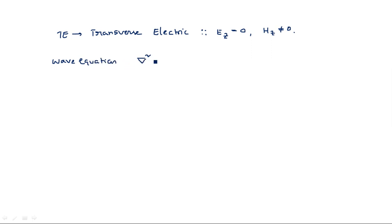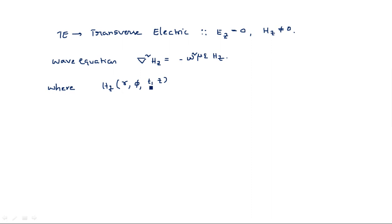The standard wave equation is: del squared Hz equals minus omega squared mu epsilon Hz. The Ez term will not be there because Ez is equal to zero. Hz is written in terms of r, phi, t, and z — where r and phi are coordinates of the circular waveguide, t indicates time variation, and z indicates the direction of propagation. So Hz equals Hz(r, phi) times e^(j*omega*t minus gamma*z).